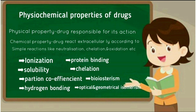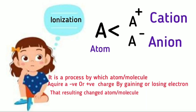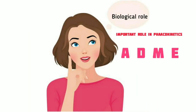In this video I am going to explain about ionization. Ionization is the process where a molecule or atom in non-ionic form converts into ionic form — either a cation or an anion. In a cation there is a release of electrons; in an anion there is an acceptance of electrons. The definition: ionization is a process by which an atom or molecule acquires a negative or positive charge by gaining or losing an electron, resulting in a change in the atom or molecule.